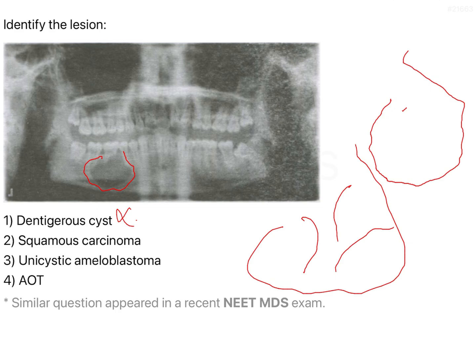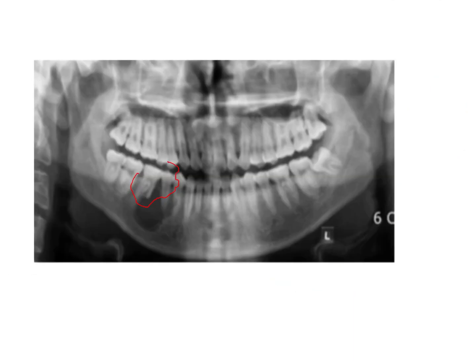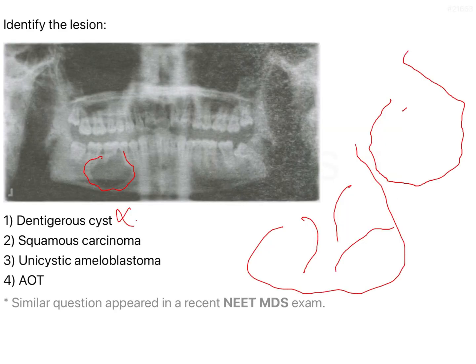Coming to squamous cell carcinoma — if it involves the alveolar bone, it is very clearly written in your textbooks that the margins are very indistinct in squamous cell carcinoma. It is not easy to find distinct margins in SCC. Over here, you can notice very clearly that there is a radio opaque border present around the radiolucency, so this lesion cannot be a squamous cell carcinoma because the borders are indistinct in SCC. So SCC is also out.